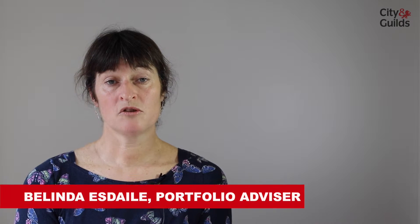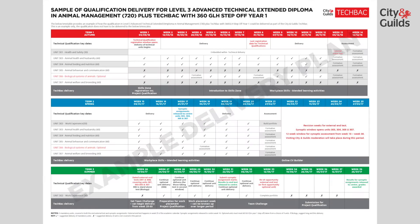Today I'm going to talk through the Sample Academic Planner to deliver the Level 3 Advanced Technical Extended Diploma in Animal Management. This Sample Planner shows the three academic terms — Autumn, Spring and Summer — in Red, Blue and Green respectively.